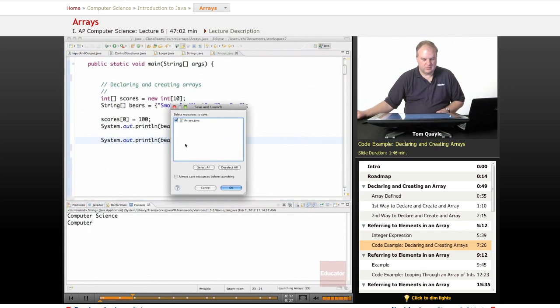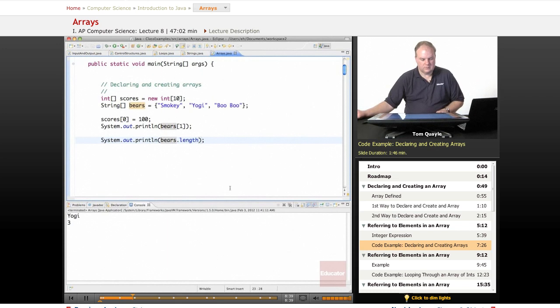So if I do this, if I run this, then it's going to print the value in position 1 of the bears array. Smokey is in position 0, so this is position 1, yogi, and it correctly identifies that and prints that out for me. And then bears.length is the number of items in the bears array. And it prints 3 because that is the number of values that I provided when I initially declared and instantiated that array.